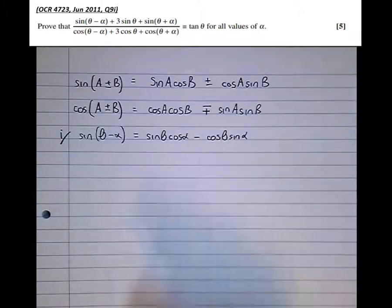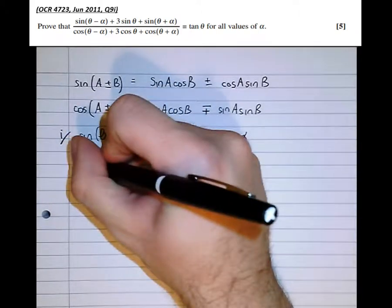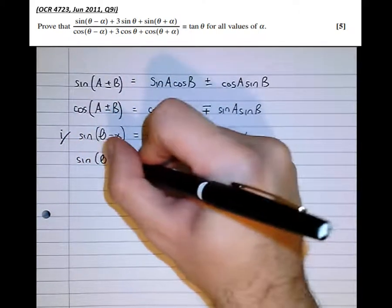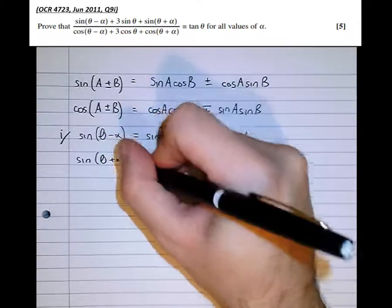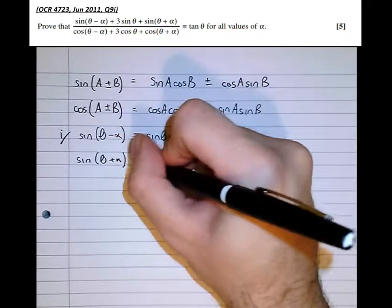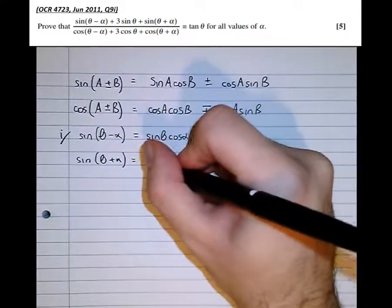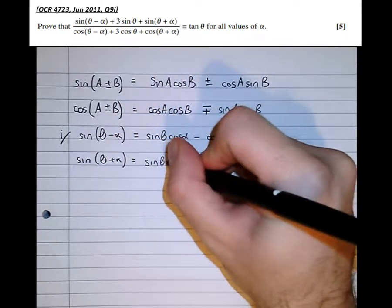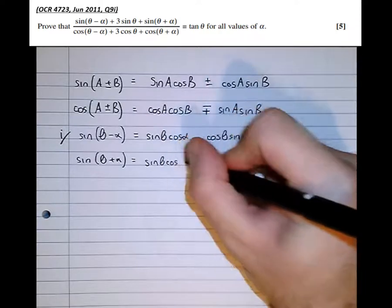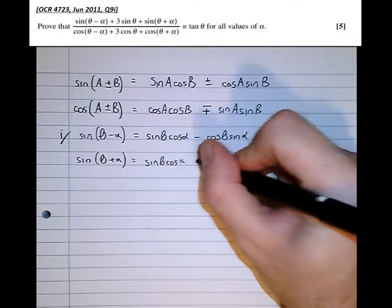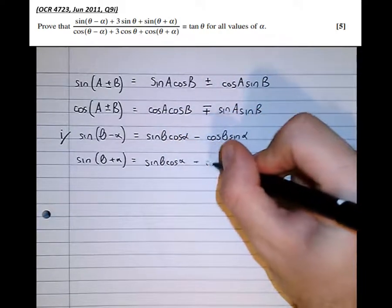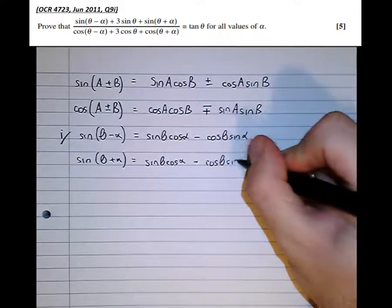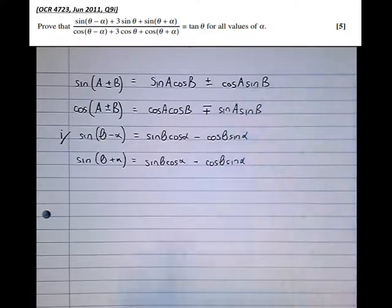Now to expand sine of theta plus alpha, we get: sine theta cos alpha, plus cos theta sine alpha.